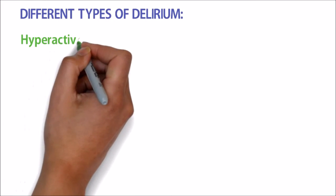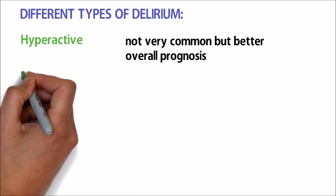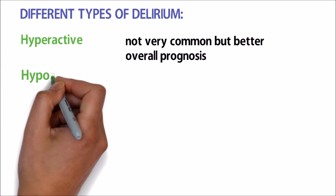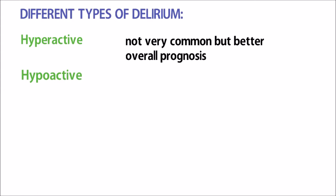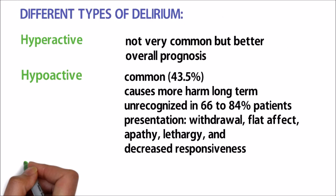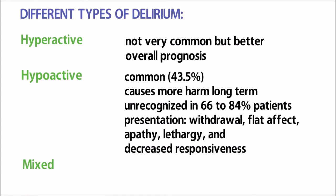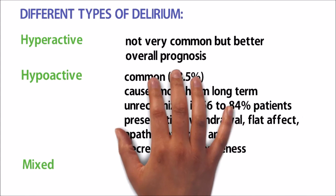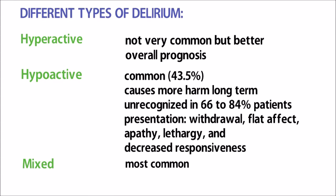There are different types of delirium: hyperactive, hypoactive, or mixed. Hyperactive delirium is not very common but has a better overall prognosis. Hypoactive delirium is one of the common forms, occurring in up to 43.5% of patients, and goes unrecognized in 66 to 84% of patients as they are often apathetic and withdrawn. Mixed delirium is one of the most common forms.